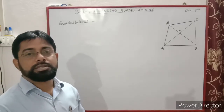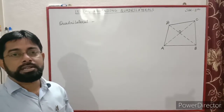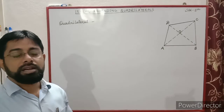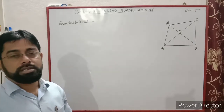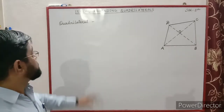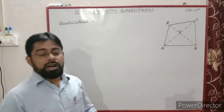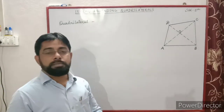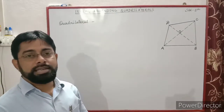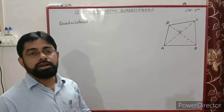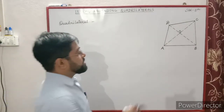Hello my dear students, today we will continue chapter number 13, Understanding Quadrilaterals. A closed figure bounded by four line segments is called a quadrilateral.